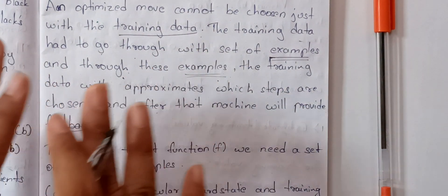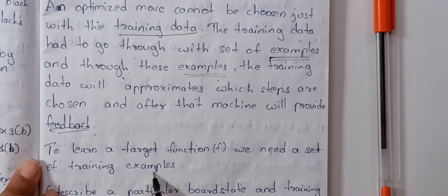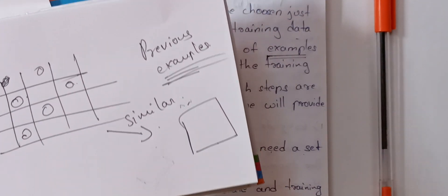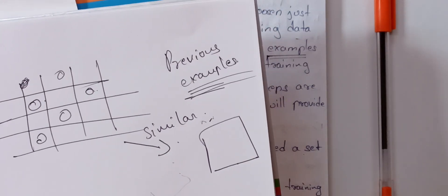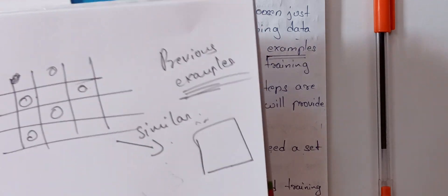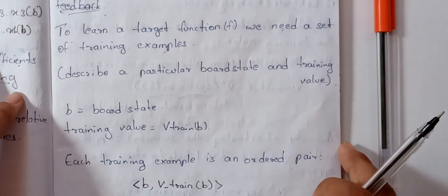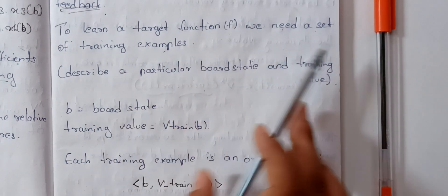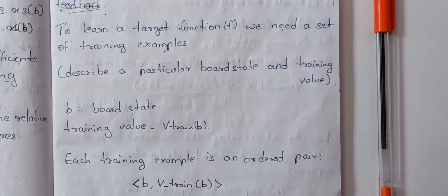The basic definition: to learn a target function, we need a set of training examples — also called training data — which is very important. Experience is gained through training data. To learn a target function, we need a set of training examples. Why? We are going to select this function approximately.